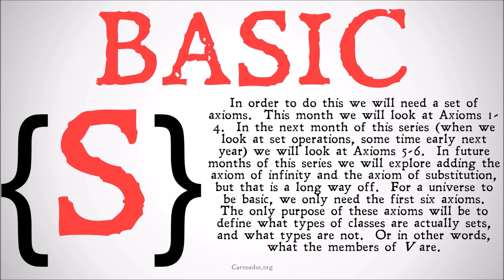The only purpose of these axioms will be to define what types of classes are actually sets and what types are not — in other words, what the members of the universal class actually are. The question is: what are the members of the universal class? Because the universal class is going to end up being infinite, we can't list them all out. So we have to simply give rules that say, if something follows this rule, then it's a member of the universal class. We can't explicitly list them in curly brackets like we might do for a finite set.